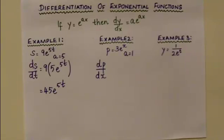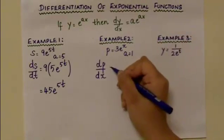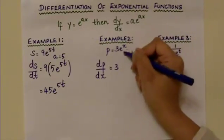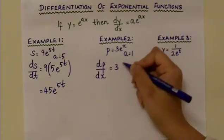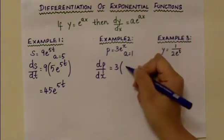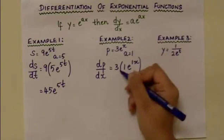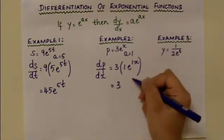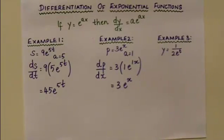Substituting into the formula: 3 is the overall coefficient of the function, so 3 remains unchanged. A is 1, giving 3 times 1e to the power of 1 times x. Therefore, 3 times 1 is 3, and the answer is 3e to the power of x.